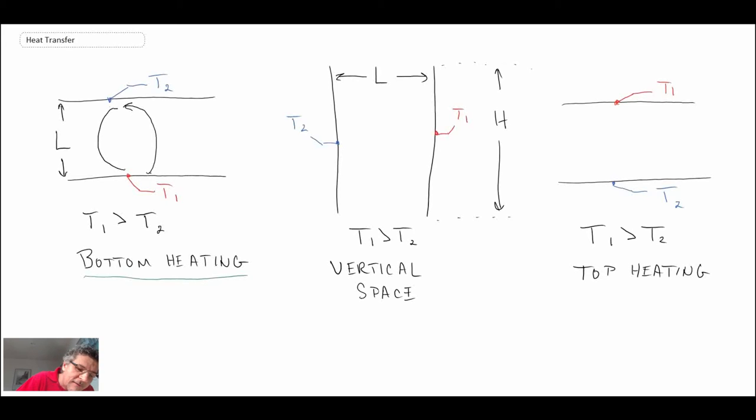When it begins to cool it becomes more dense and consequently starts to descend. What we then find is we get these cells developing—we refer to those as convective cells that exist within the enclosed space. There's a certain temperature differential before that begins to take place.